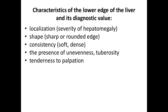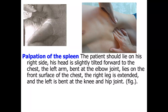During palpation of the liver, give characteristics and assess: the severity of hepatomegaly, shape of the edge of the liver — it may be sharp or rounded, normally sharp; consistency — soft or dense, normally soft elastic; presence of unevenness or tuberosity; tenderness to palpation; and whether the edge is smooth or rough.